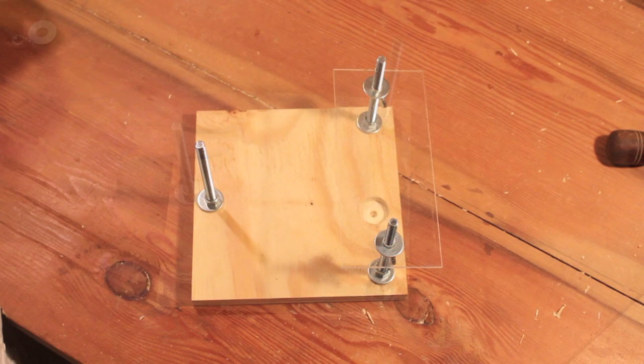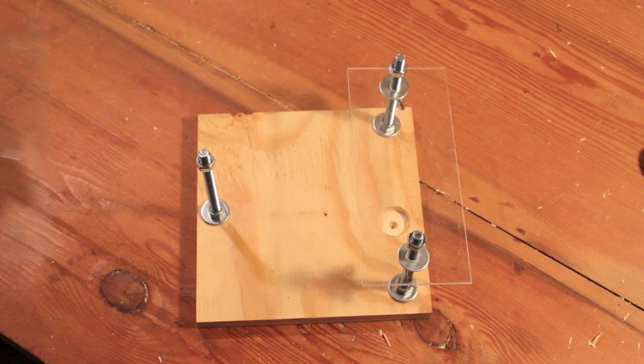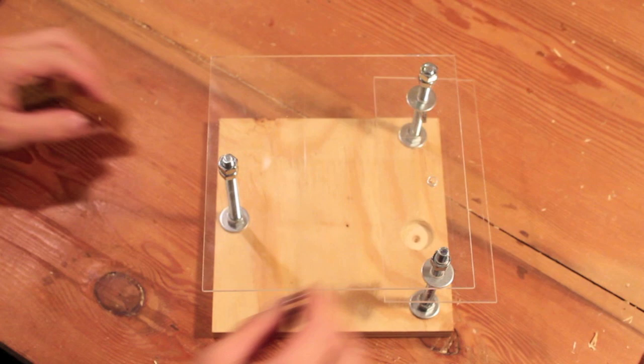Before securing the stage in place, check to make sure it's level. Tighten the final three wing nuts, add the LED light, and your microscope stand is now complete.